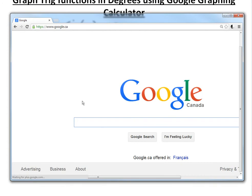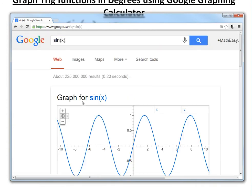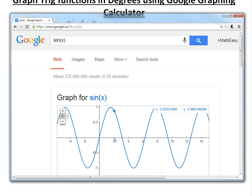So if you were to go to google.ca or google.com, just type sine of x. As you can see, it's in radians because instead of 180, it goes to something like 3.14, which is pi. And then it goes up to here somewhere, right here, 6.24 or something like that.